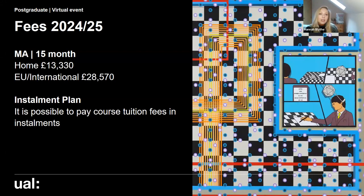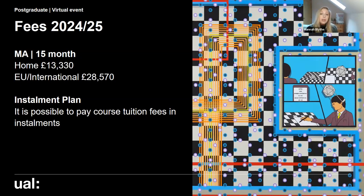The fees for the next academic year for our MA courses, which are 15 months: if you're a home fee payer it would be £13,330, and if you're an EU or international fee payer it would be £28,570. It is possible to pay your tuition fees in instalments rather than in one lump sum, spread across the time that you're studying with us.